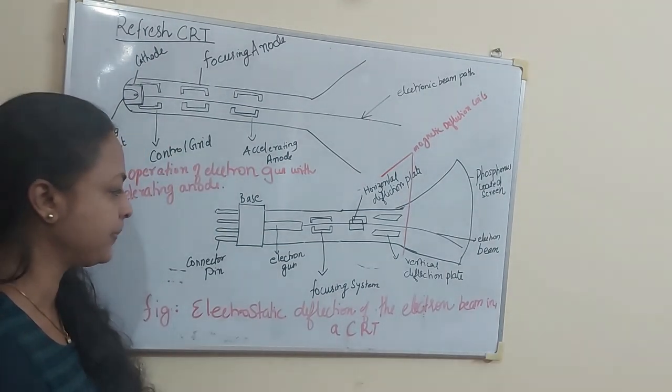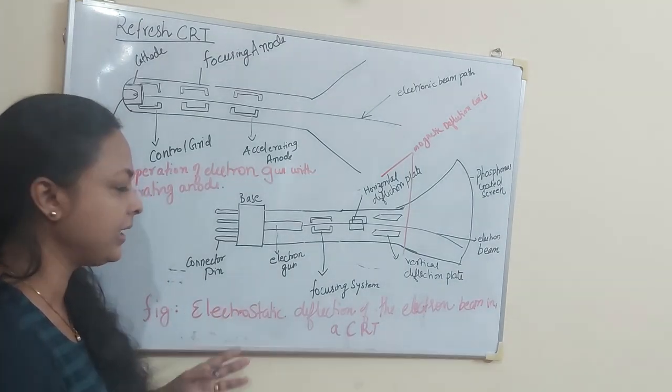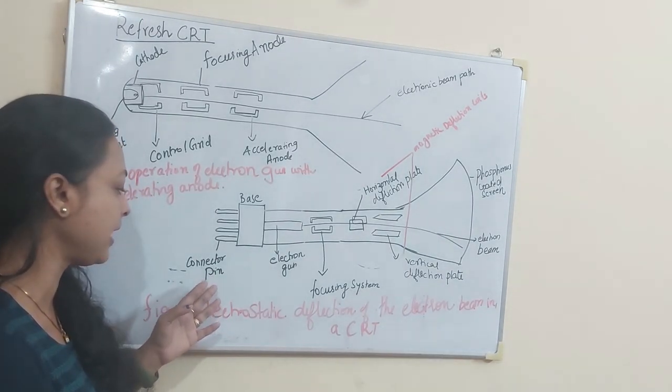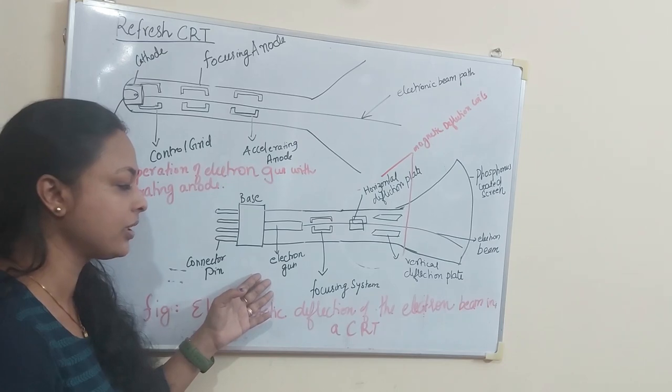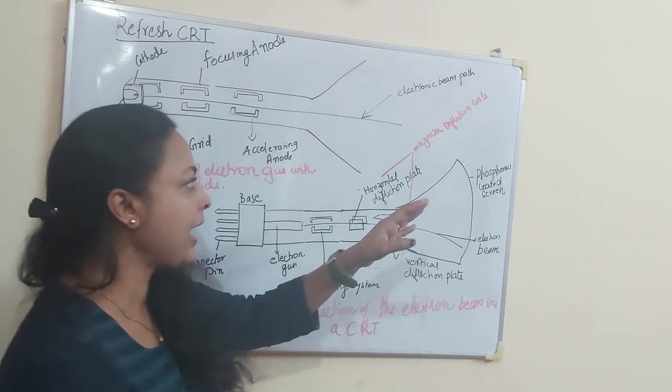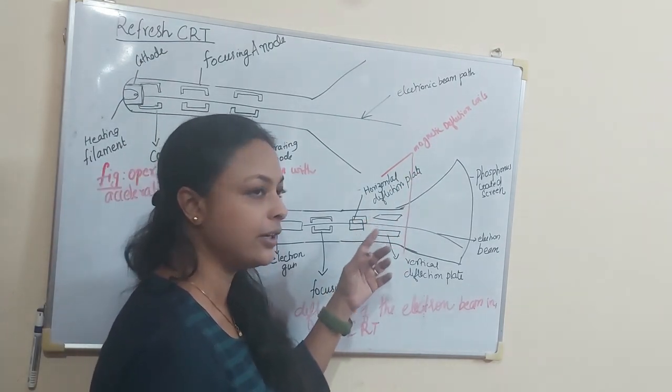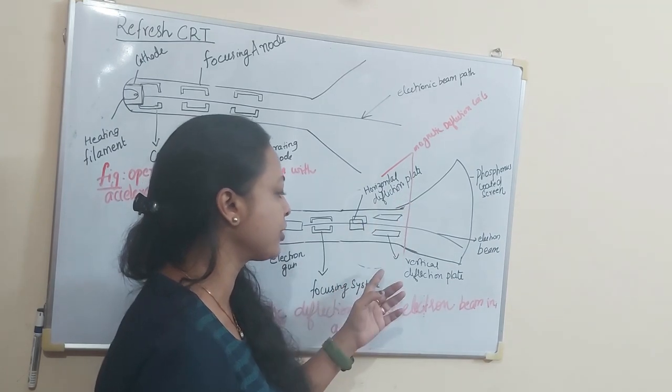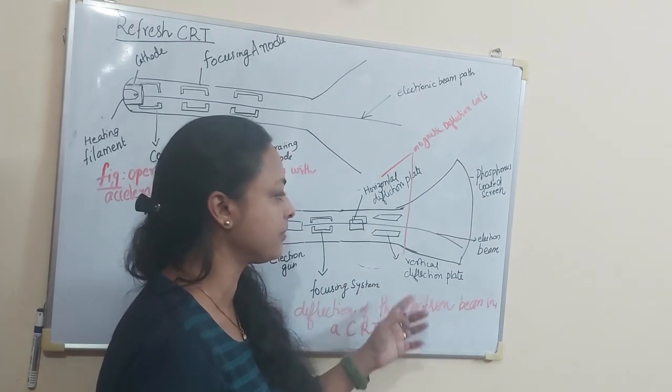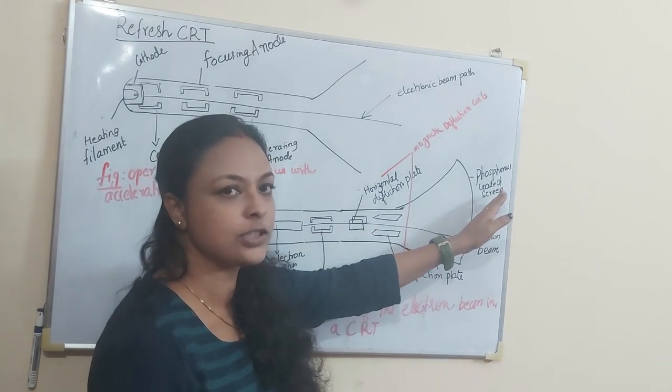Let me explain the main parts. The main part is a connector pin, base, electron gun, focusing system and magnetic deflection coils. That is a horizontal deflection plate, a vertical deflection plate. The main part is a phosphor coated screen.